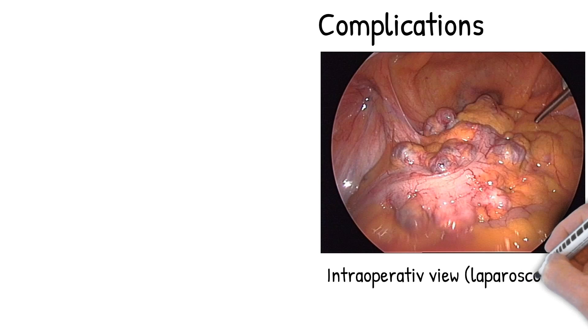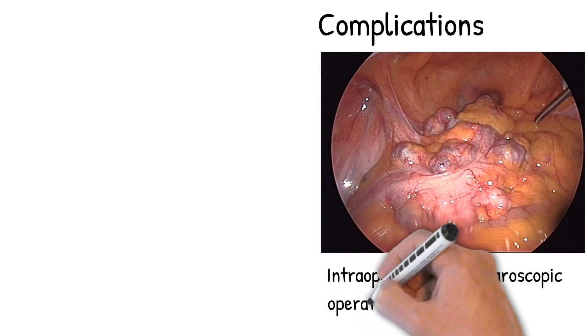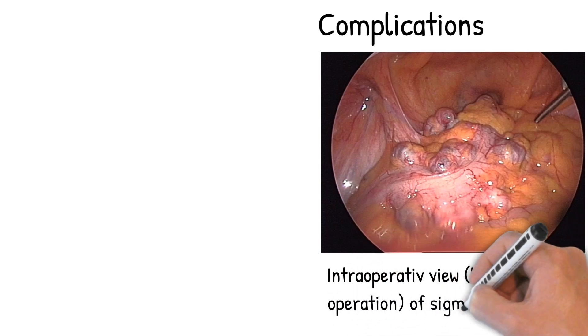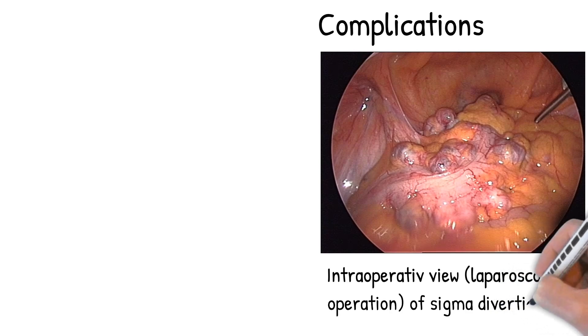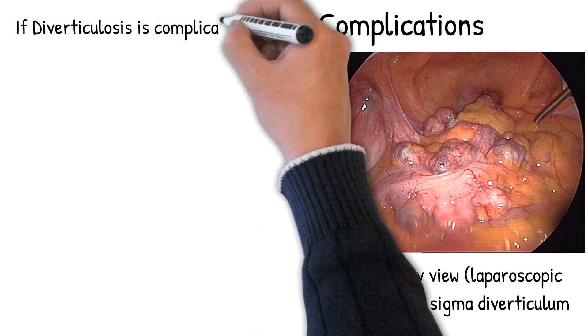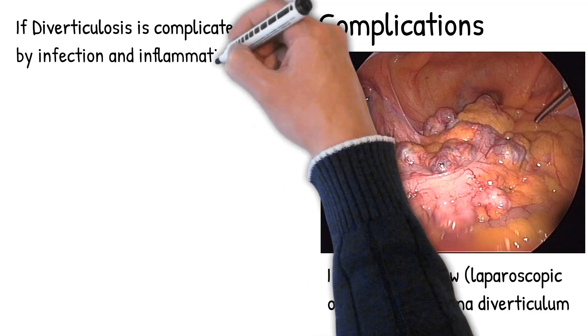Diverticulitis is the most common complication, caused by stool that is impacted as a fecalith in the diverticulum sac. This produces ulceration and ischemia, with compression of the vasa recta. Fever occurs only with diverticulitis.